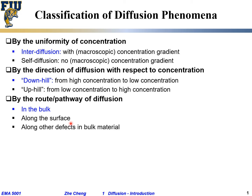Diffusion can also occur along other defects within the bulk material. For example, it may occur along certain interfaces such as grain boundaries. If we have the same material — for example silicon — there may be one silicon grain and another silicon grain, and between them there is the so-called grain boundary, or GB. The atom arrangement is disrupted there, but species — atoms, molecules, or ions — may move along grain boundaries to achieve mass transport. This is another diffusion pathway.